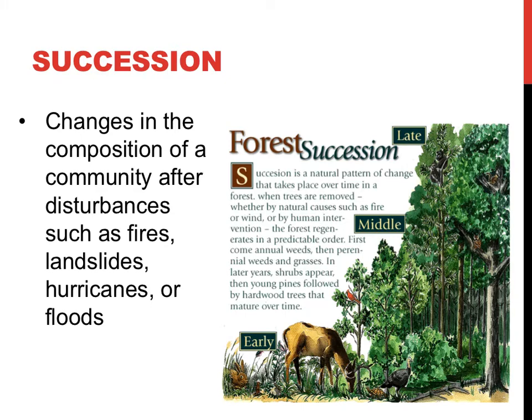Humans can also impact communities due to pollution, agriculture, or deforestation. There is a normal progression within an ecosystem over time, from when a disturbance occurs or a new location becomes habitable, and succession is the study of this progression.